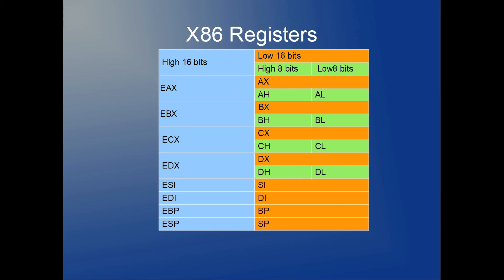The lower half of each register can be further subdivided into additional sub-registers, indicated in green. For example, the EAX accumulator register has a high 16 bits and a low 16 bits. The low 16 bits are addressed using the name AX, and AX can itself be subdivided into AH — the high 8 bits — and AL — the low 8 bits.